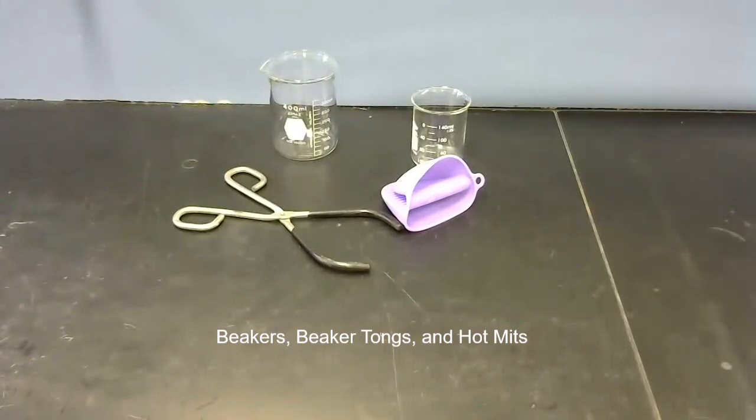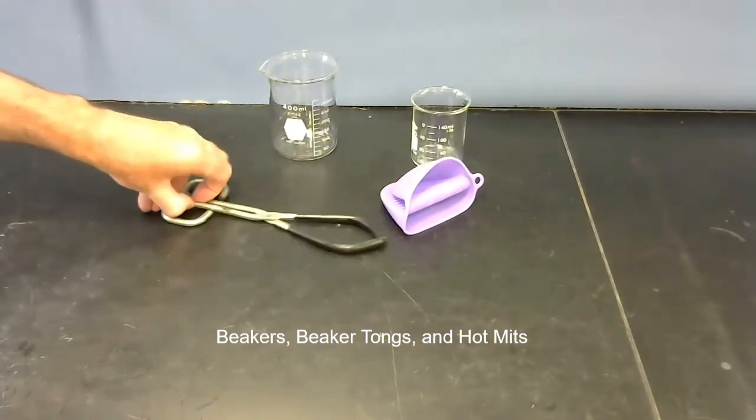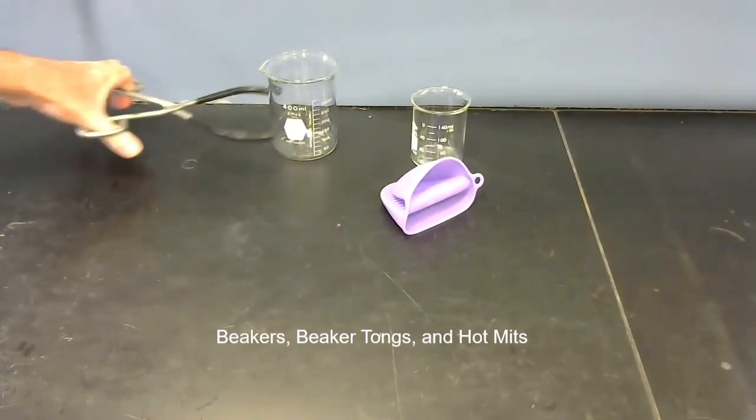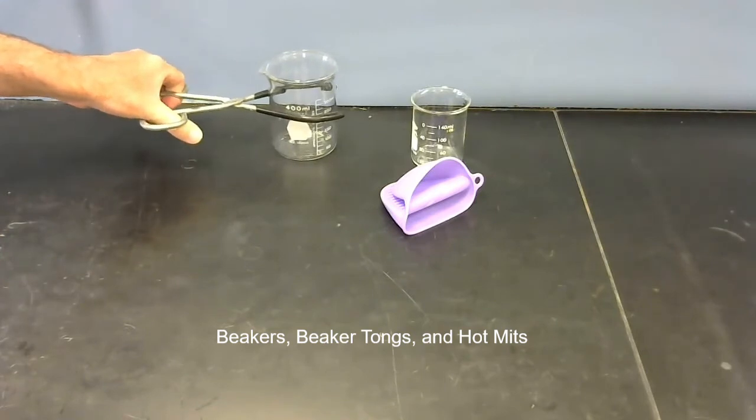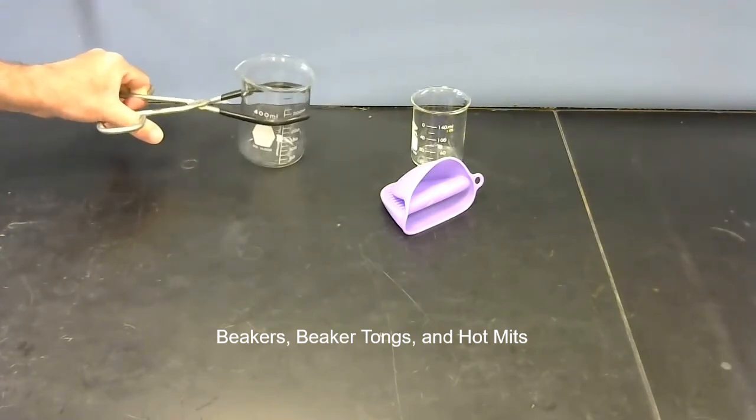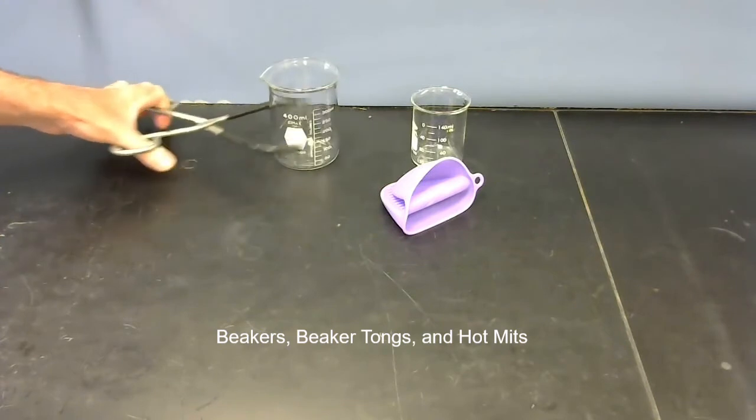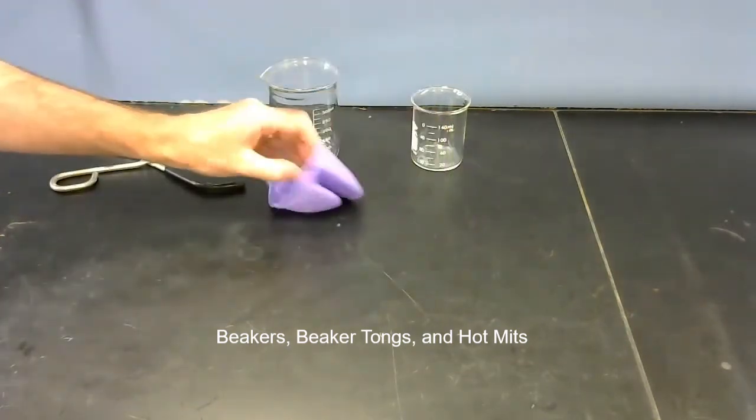These are beakers of different volumes. You've got beaker tongs that you can use if something in the beaker is hot, you can pick it up without burning your hands. Or if it's something smaller, you can use these hot mitts.